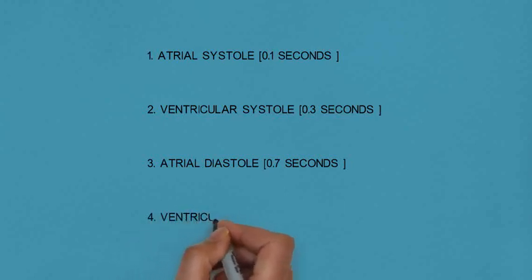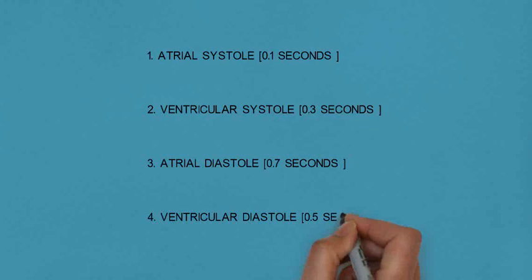The fourth stage is ventricular diastole, lasting about 0.5 seconds. It begins before atrial systole, allowing the ventricles to fill passively with blood from the atria.